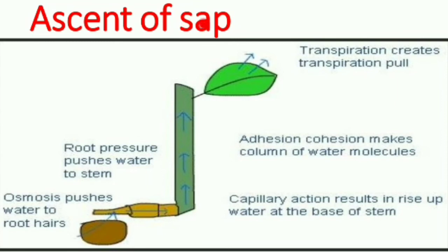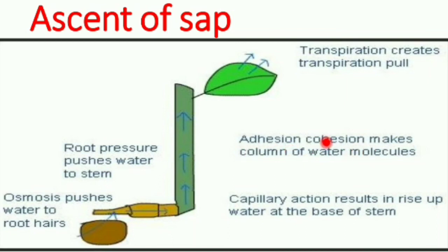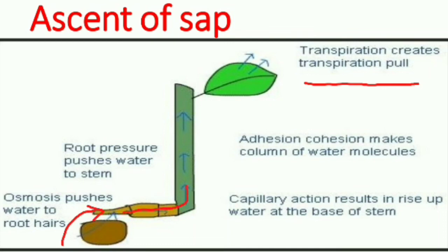Ascent of sap means the transportation of water and minerals from the root to the leaves — that is, the upward movement. Water enters into the root hair through osmosis and is then transported to the stem by the process of root pressure. Capillary action results in raising up the water at the base of the stem. Adhesion — the force of attraction between different molecules — and cohesion — the force of attraction between the same molecules — make the column of water molecules. Finally, it reaches the leaves where transpiration occurs, creating a transpirational pull that drives water transport from root to leaves.